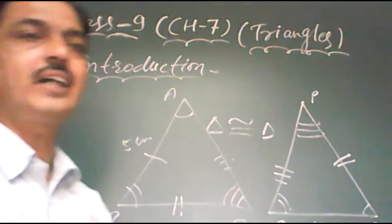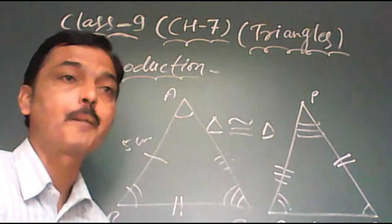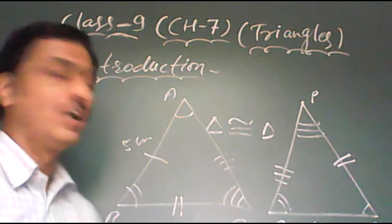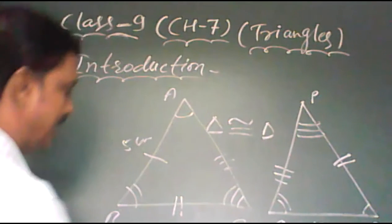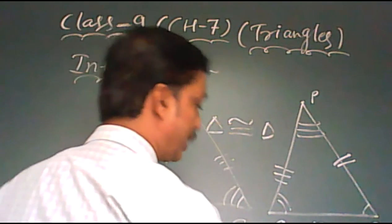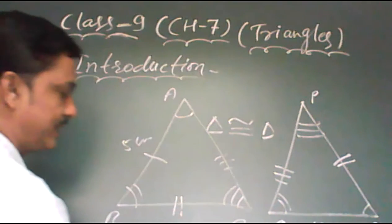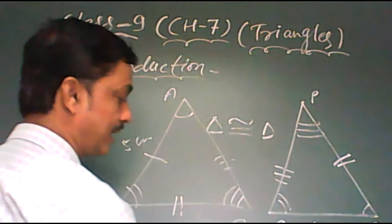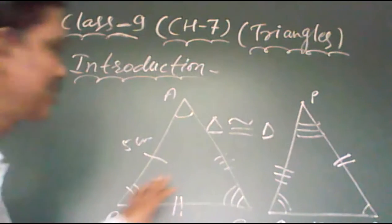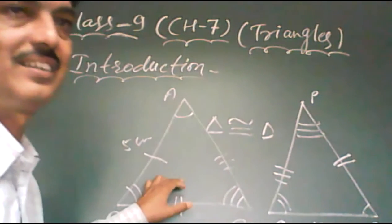Triangle ABC congruent triangle BQR. It may be triangle ABC congruent triangle QVR, or RBQ. It depends on the corresponding parts.